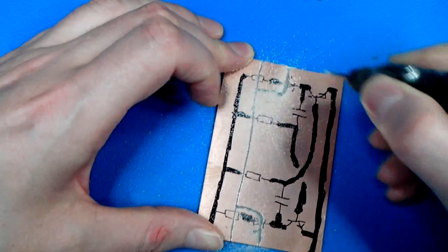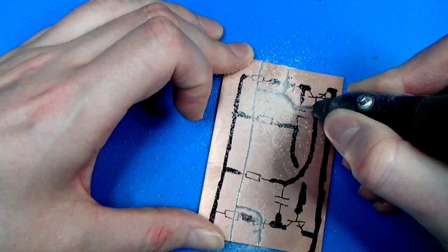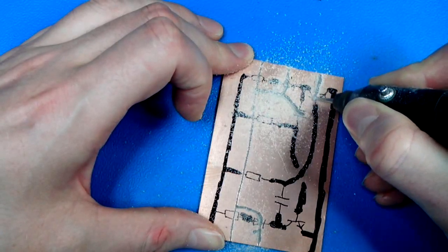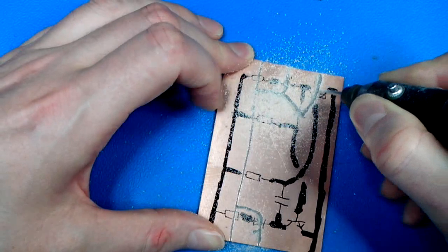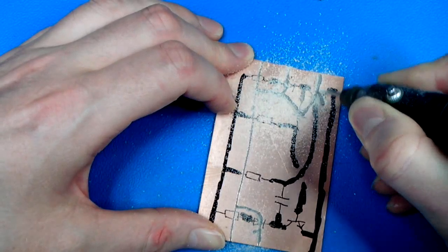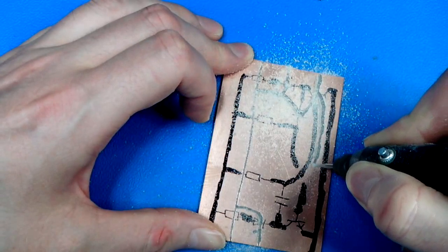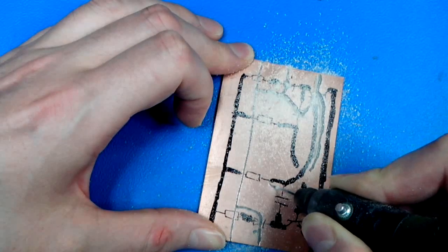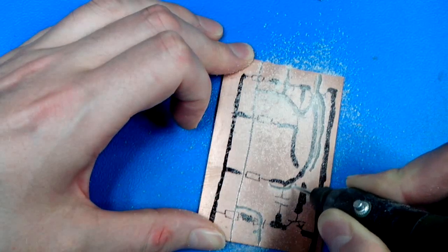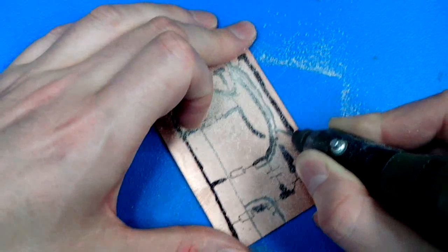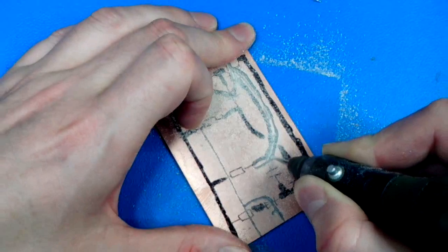One downside of a breadboard and even vero board is that the isolation between the rails or pads is very small. If you're working with high voltages - a couple hundred volts or a thousand volts - you have to put in extra work to make the isolation distance enough. But here, just carve away as much copper as you want. This is about one millimeter, which is more than enough for 250 volts.